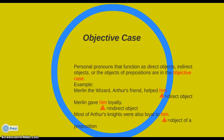I've shown an example of each one here. "Merlin the wizard, Arthur's friend, helped him" — him is a direct object, so that's objective case. "Merlin gave him loyalty" — Merlin gave loyalty to whom? Him. That makes him the indirect object, so we use the objective case. We can also use it as the object of a preposition: "Most of Arthur's knights were also loyal to him." To him is a prepositional phrase, so him is the object of the preposition to.